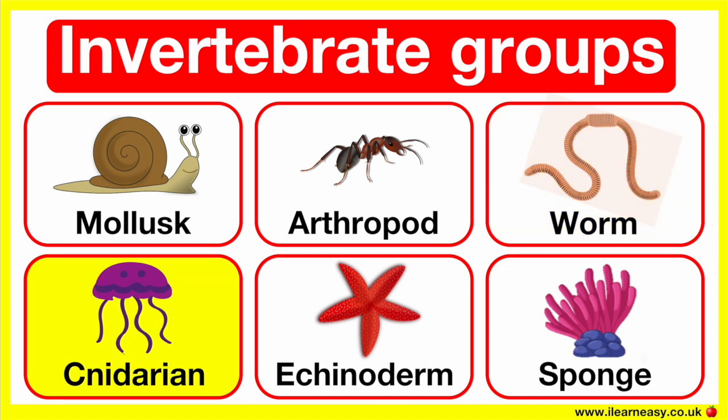The jellyfish group is also known as cnidarians. These are marine animals that usually have tentacles with stinging cells. They use these to capture food. Examples are jellyfish and polyp.